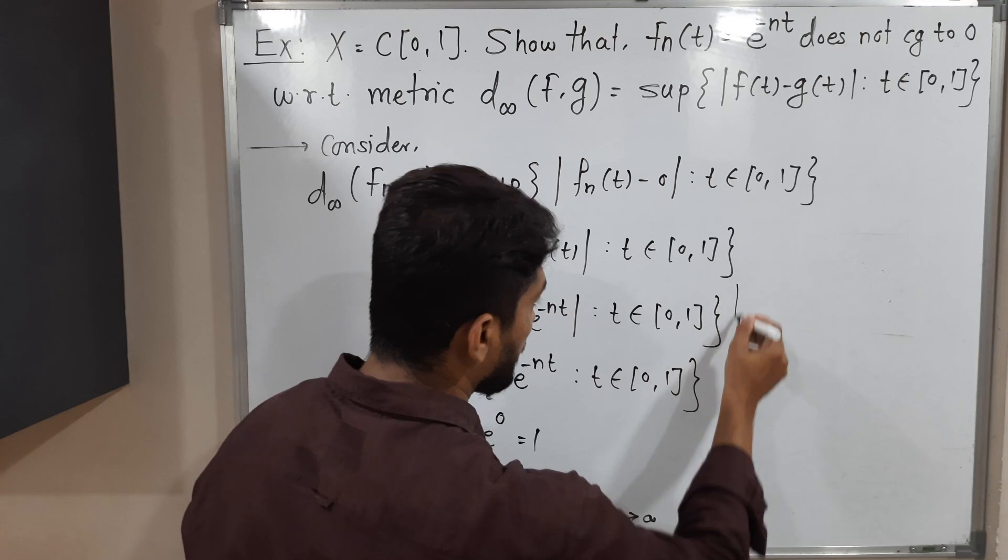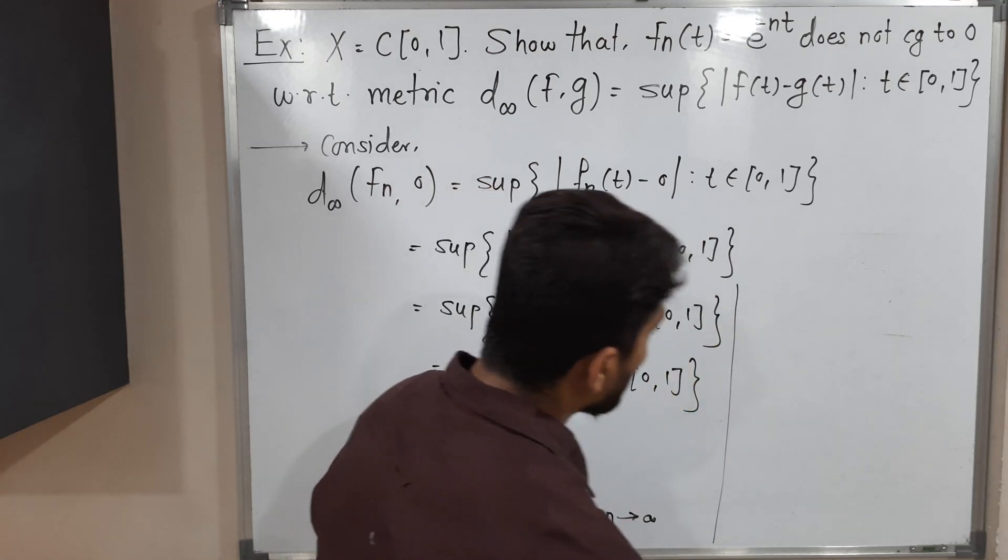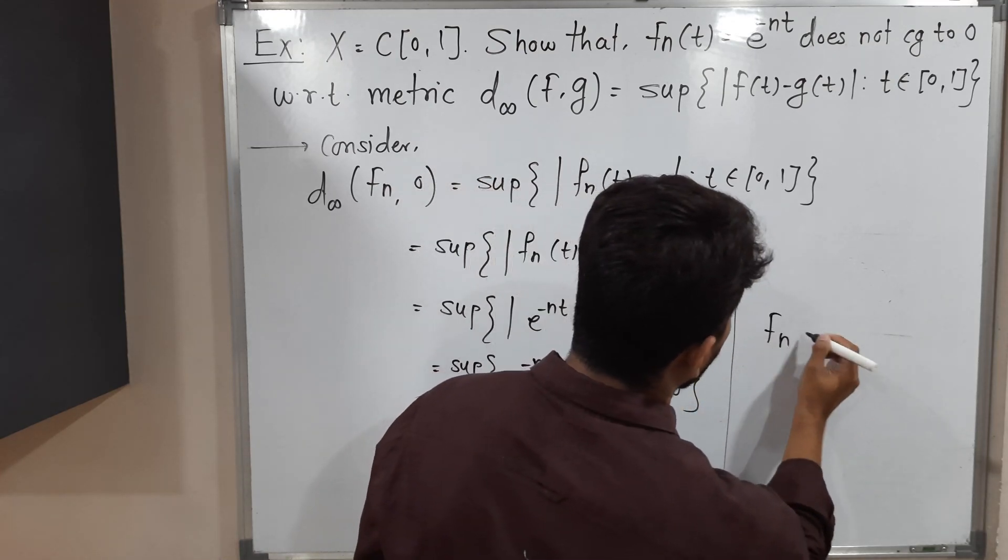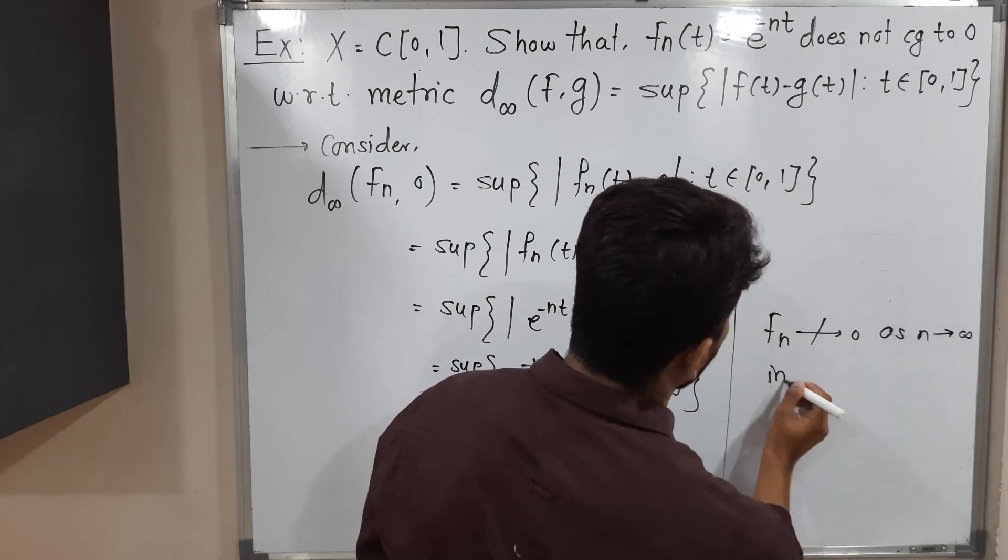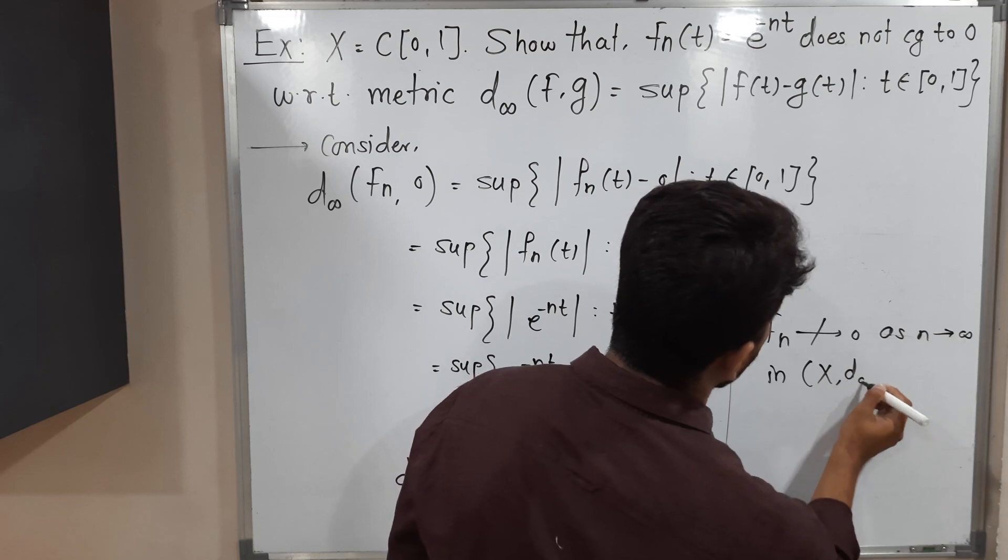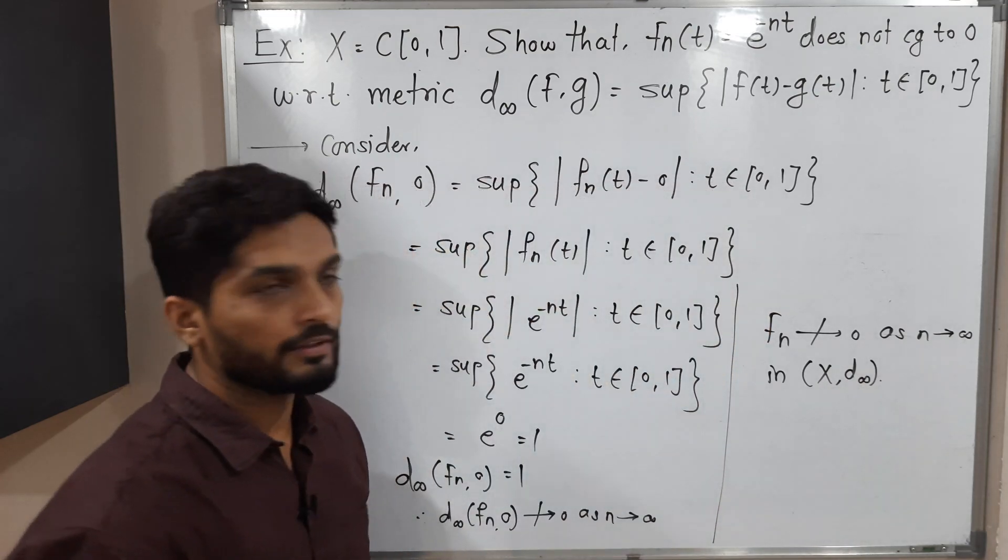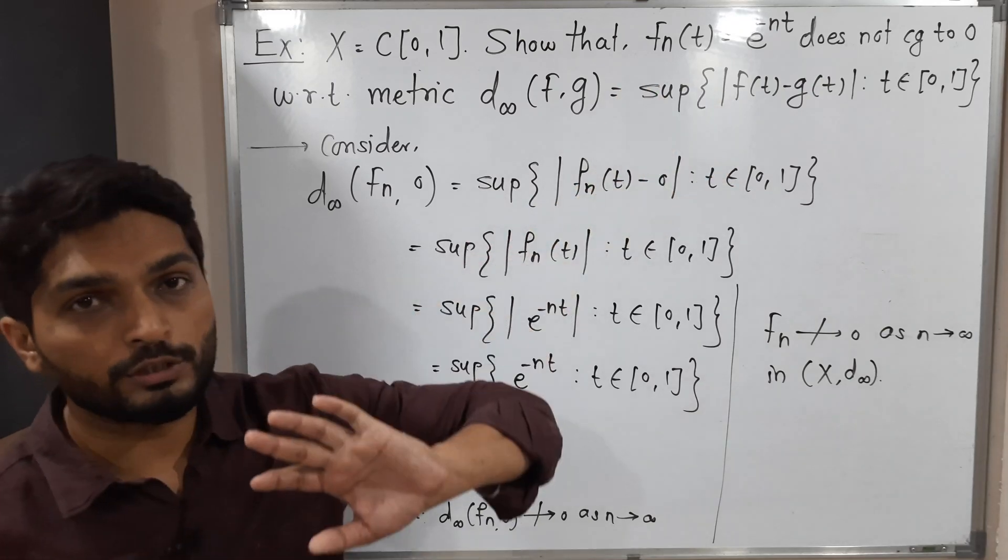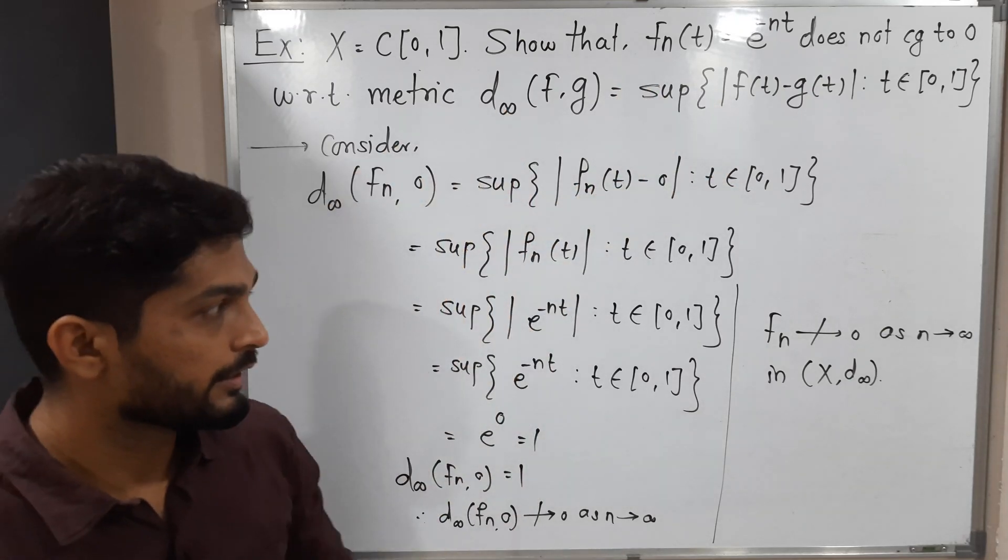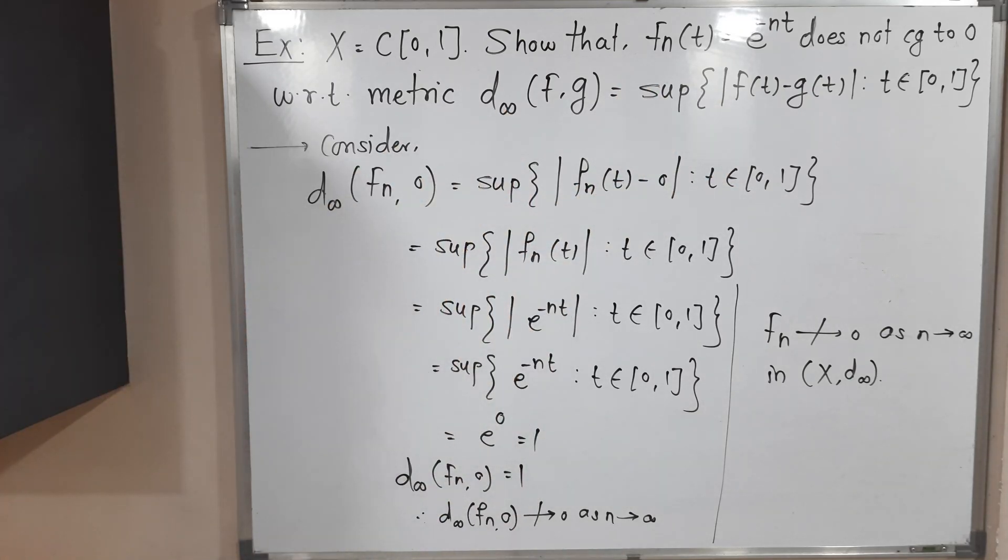So that's why Fn does not converge to 0 as n tends to infinity in this metric space (X, D∞). Therefore, we say that Fn(t) does not converge to 0 with this metric D∞. The solution is over.